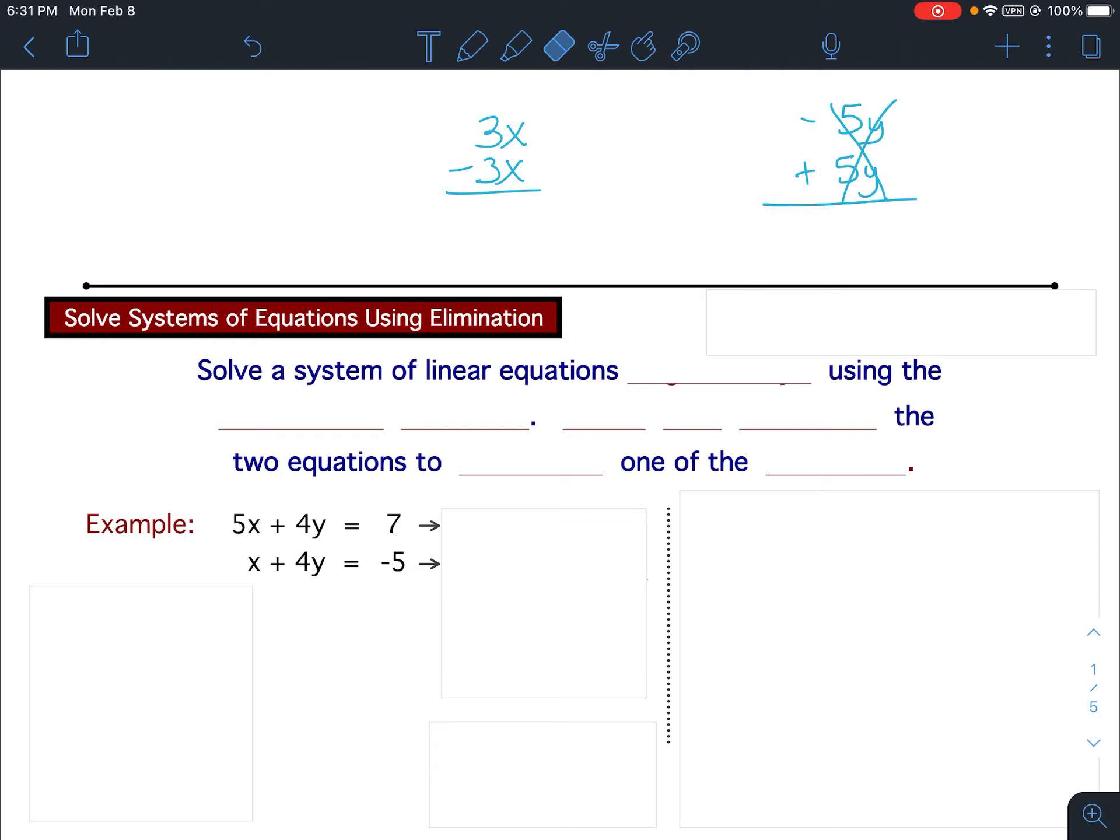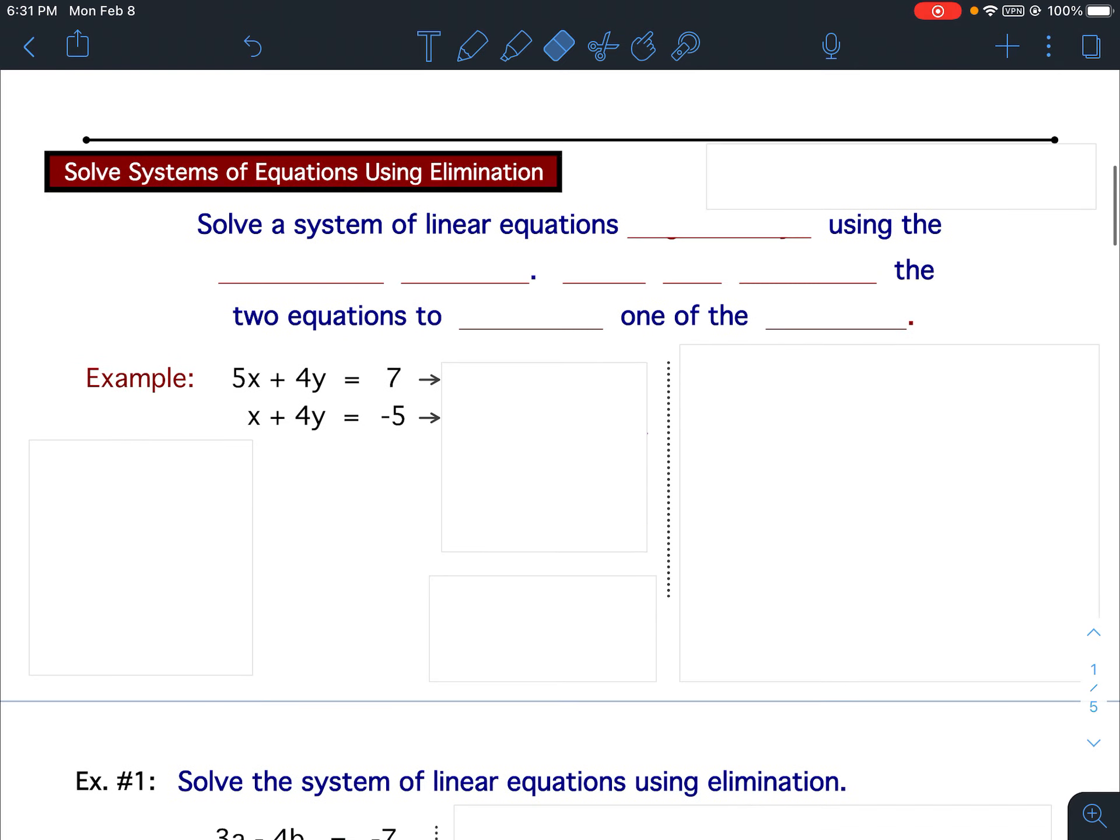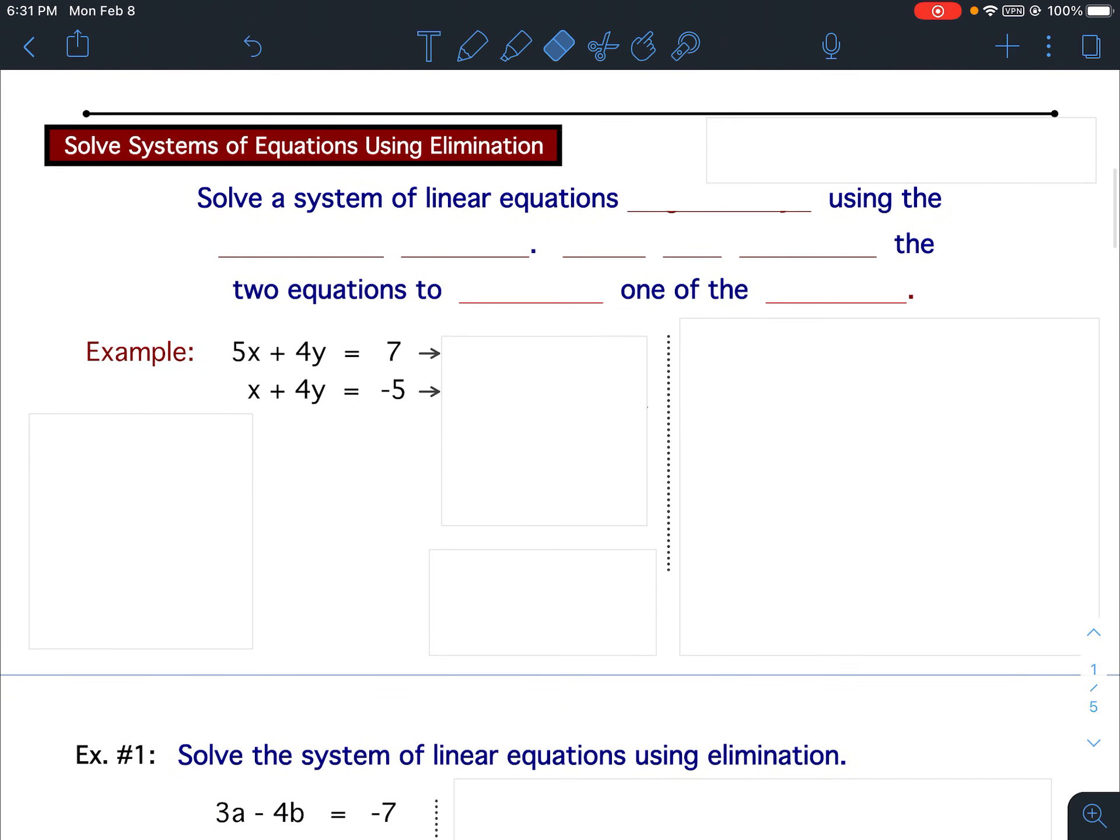If you look at these, 3x and negative 3x, or negative 5y and positive 5y, they are called opposites. So when you have opposites, it will eliminate a term. And that is the key to this lesson. The key to this lesson is having opposites, so you can eliminate a variable term.